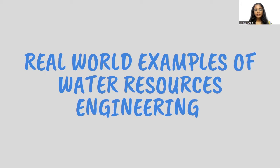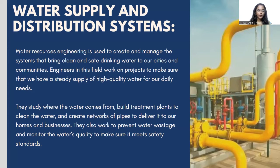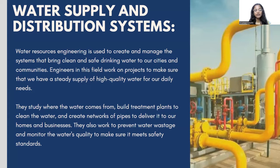Let's see some real-world examples of water resources engineering. The first is water supply and distribution systems. Water resources engineering is used to create and manage systems that bring clean and safe drinking water to our cities and communities. Engineers work on projects to ensure a steady supply of high-quality water for our daily needs. They study where the water comes from, build treatment plants to clean the water, and create networks of pipes to deliver it to our homes and businesses. They also work to prevent water wastage and monitor water quality to ensure it meets safety standards.